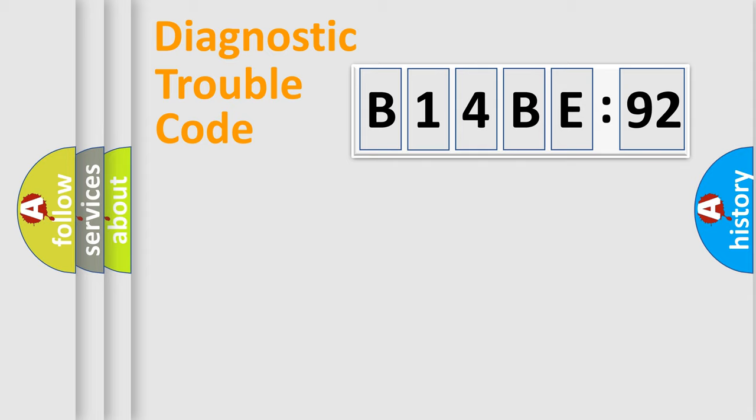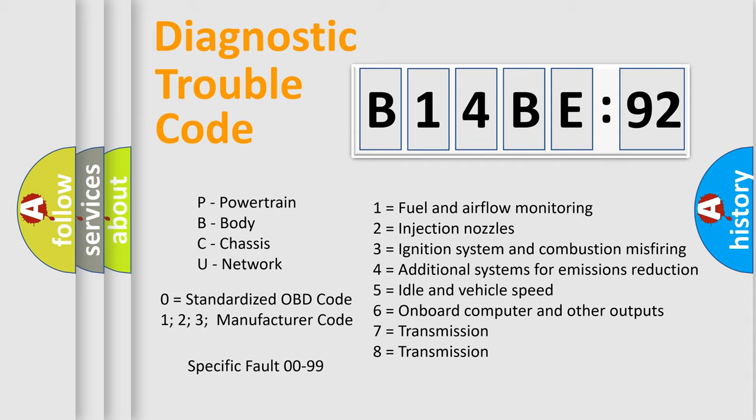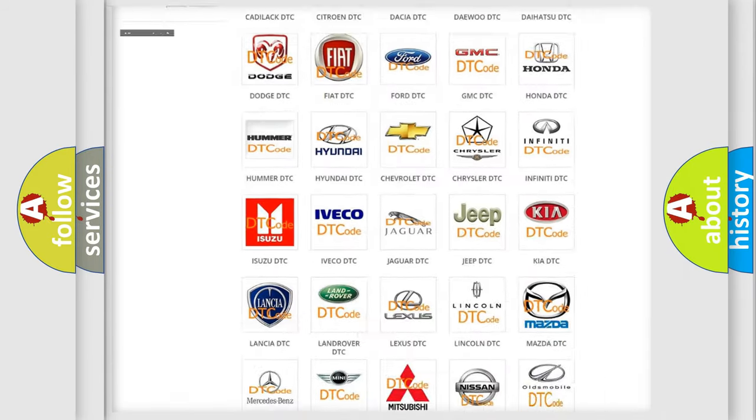Our website airbagreset.sk produces useful videos for you. You do not have to go through the OBD2 protocol anymore to know how to troubleshoot any car breakdown. You will find all the diagnostic codes that can be diagnosed in Chrysler vehicles, also many other useful things.